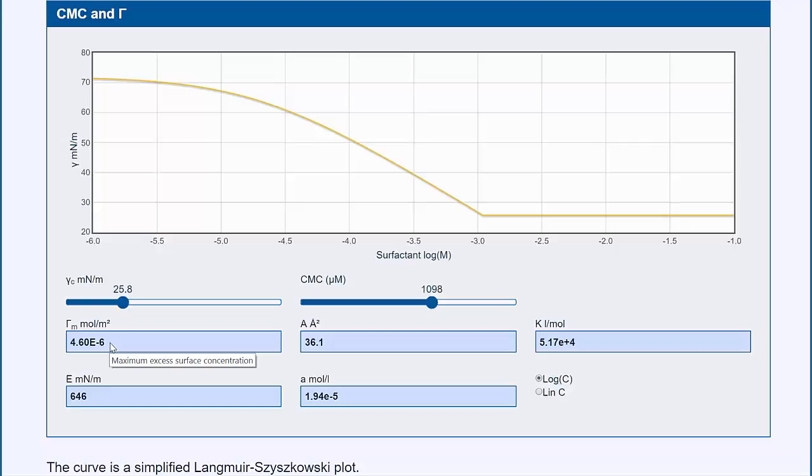You change gamma M, which is the maximum excess surface concentration. So that's the concentration of surfactant at the surface in moles per square meter, and also the area of the head of the surfactant.